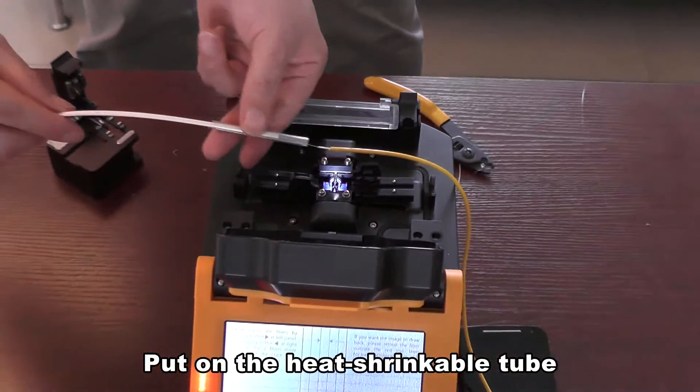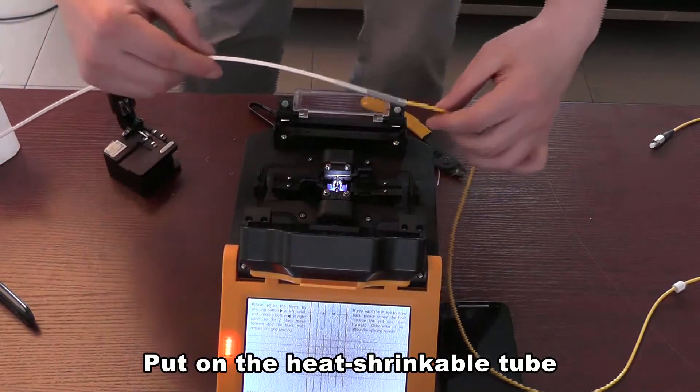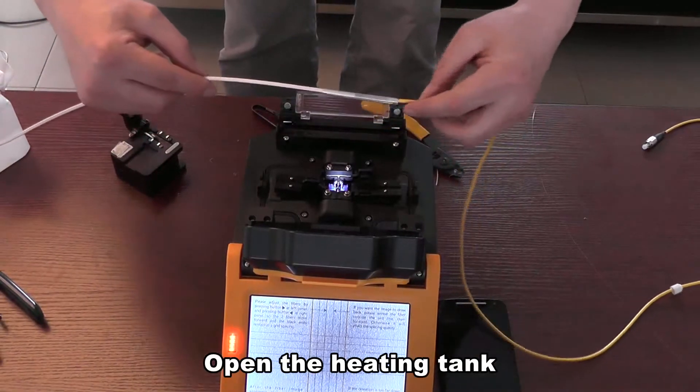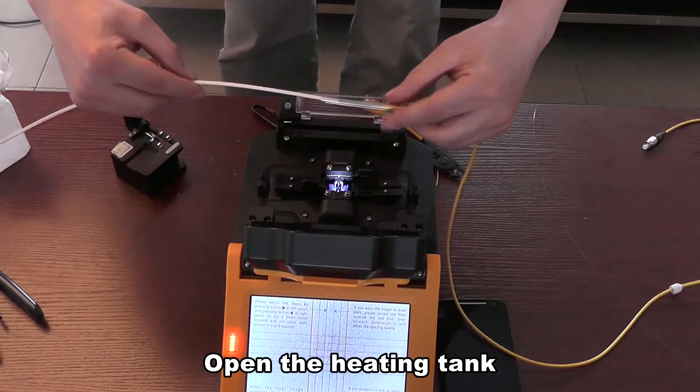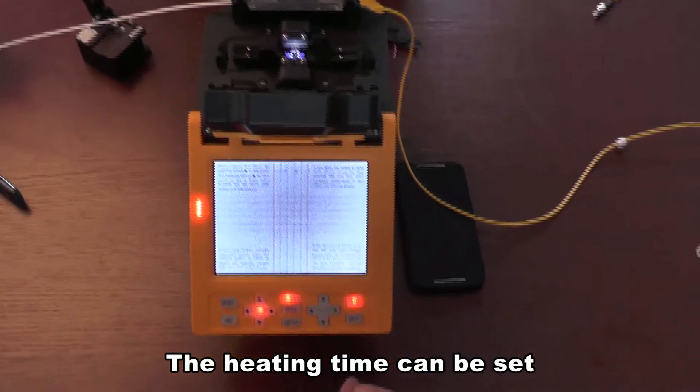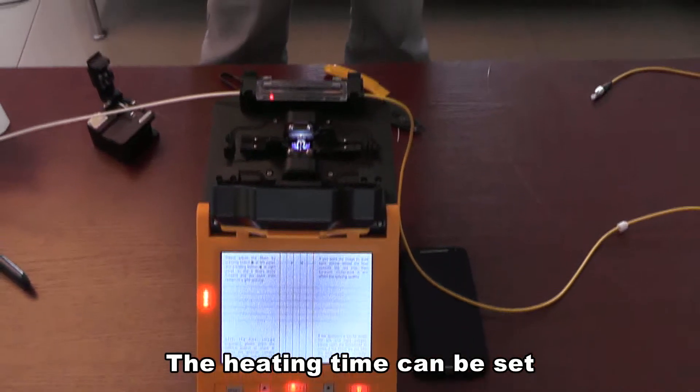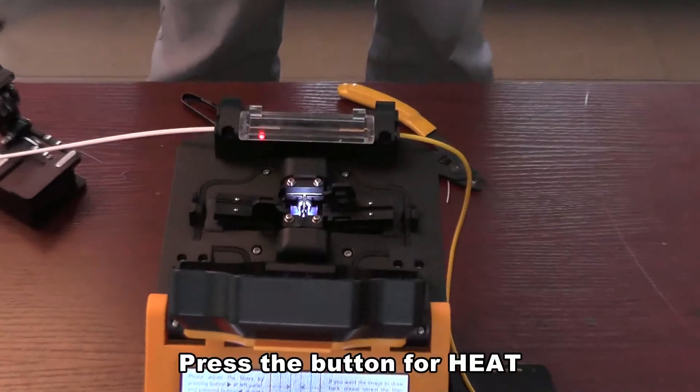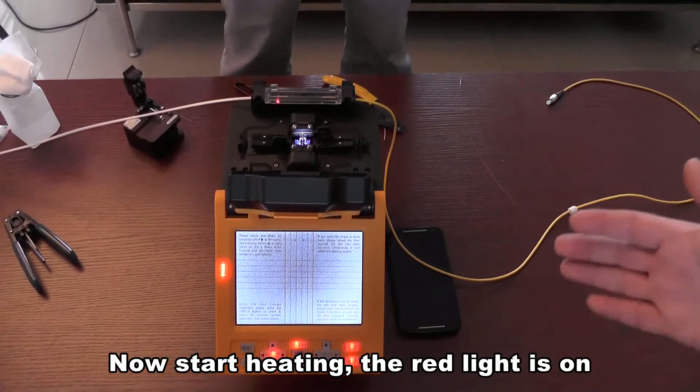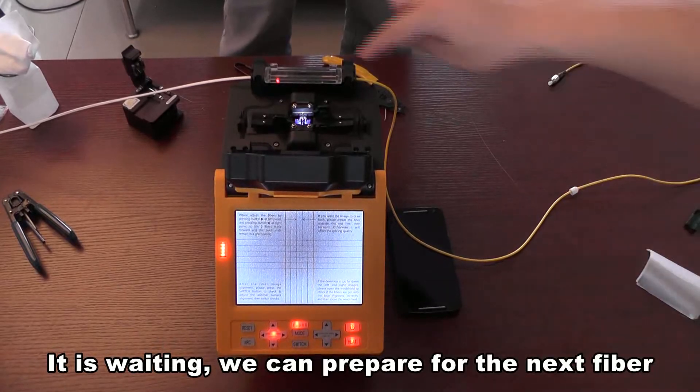Put on the heat shrinkable tube. Open the heating tank. The heating time can be set. Press the button for heat. Now start heating, the red light is on. It is waiting, we can prepare for the next fiber.